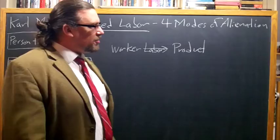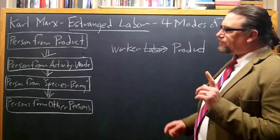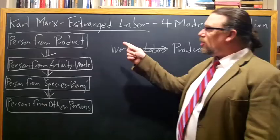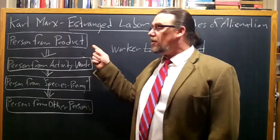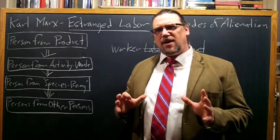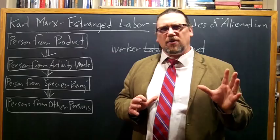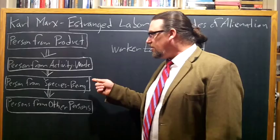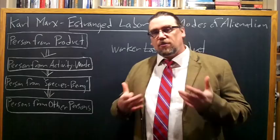Marx charts out a kind of progression through four kinds of alienation. We start with alienation of the person from the product of labor, which leads into alienation of the person from the very activity of work. That leads into — through a passage that's a bit tricky terminologically but easy to understand — alienation of the person from their species being. And then finally we get to alienation of persons from other persons.